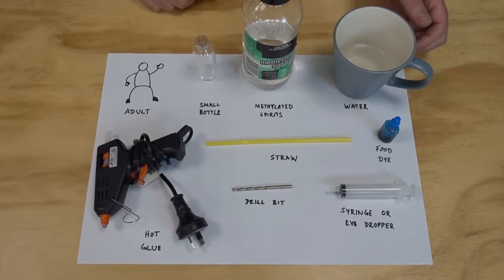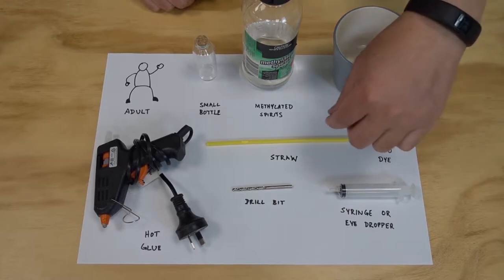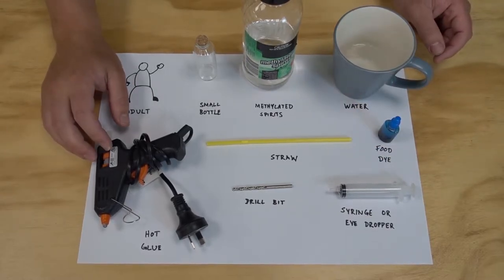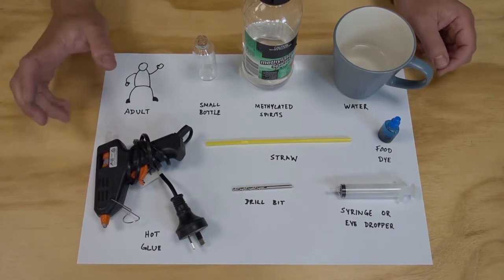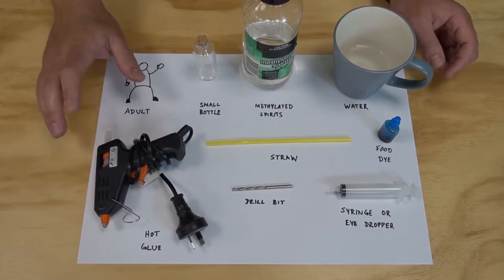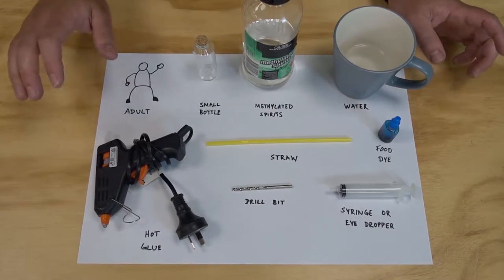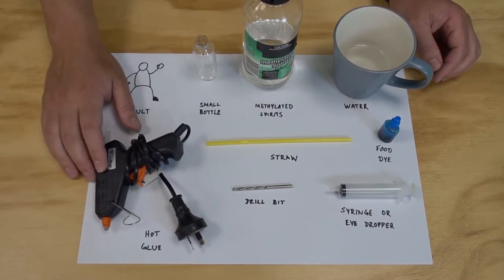We need some methylated spirits and some water, some food dye, a straw, some hot glue. Now if you don't have hot glue you can use something else. We just need to make sure we can get an airtight seal. Modeling clay might work. I've tried this with blue tack—it definitely doesn't work—so I'm sticking with hot glue.